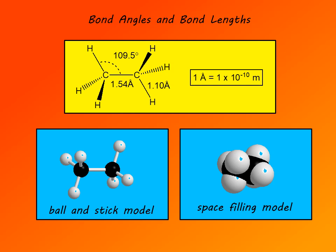On the right we have the space-filling model of ethane. From this model it is difficult to determine bond lengths and bond angles, but you can see the bulk of the molecule — it's a somewhat elongated shape. Neither model is ideal on its own; neither tells us complete information. But the combination of the two gives a good picture of what the molecule looks like. Usually in organic chemistry we use ball-and-stick models because we are mainly interested in bond lengths and bond angles.